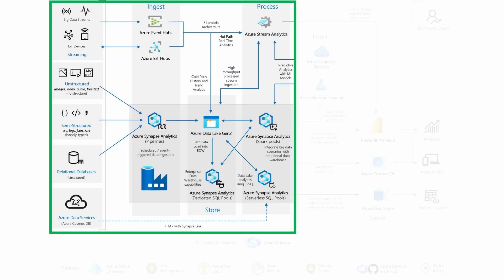Again, let's take a look at the modern data platform using Azure data services. What we are seeing here, we have different systems that will be producing events. We can ingest those events using Azure Event Hub or Azure IoT Hubs. We can then use Azure Stream Analytics to do real-time analytics, or you can do some stream ingestion in which we will process the data and then store it back somewhere — either in block storage or object storage such as Azure Data Lake Storage, or in some dedicated SQL pools.